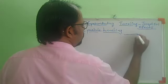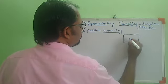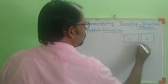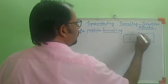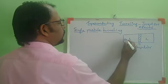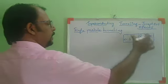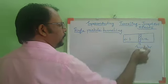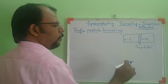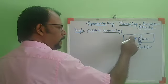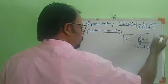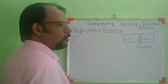Consider two metallic conductors, one and two, separated by an insulator. If the thickness of the insulator is sufficiently small, then there is a finite probability of electrons impinging on the insulating material that can pass through to the second conductor. That effect is called tunneling.